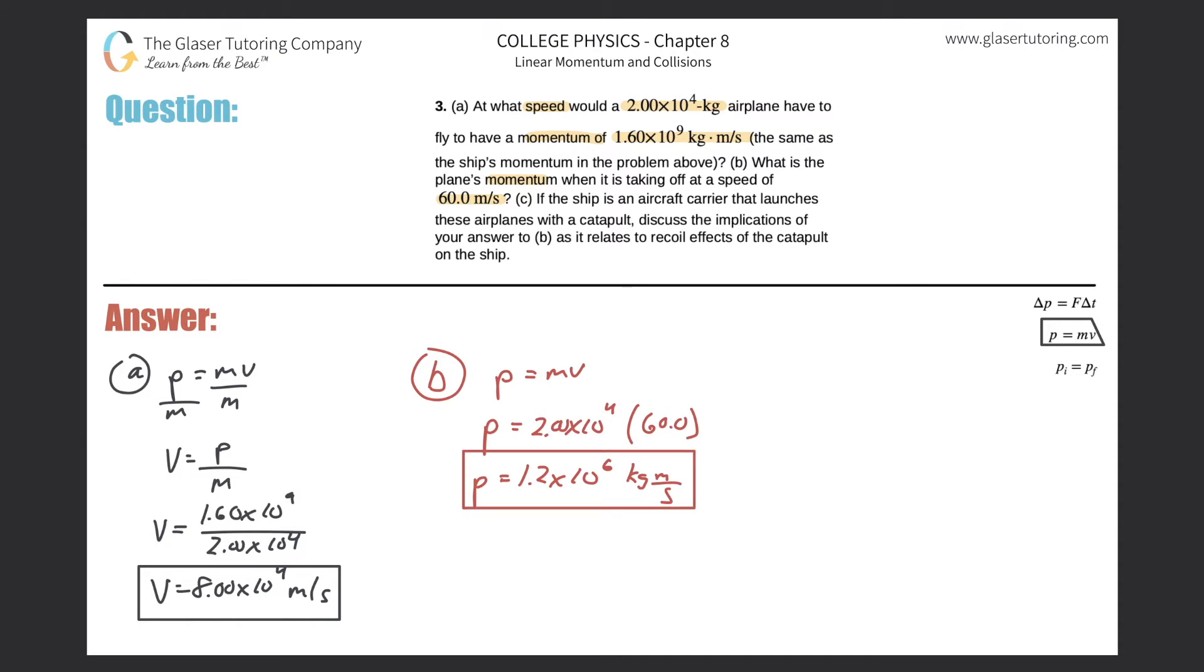That's the momentum of the airplane when it takes off. So now letter C is saying, if the ship is an aircraft carrier that launches these airplanes with a catapult, discuss the implications of your answer to B as it relates to the recoil effects of the catapult on the ship.